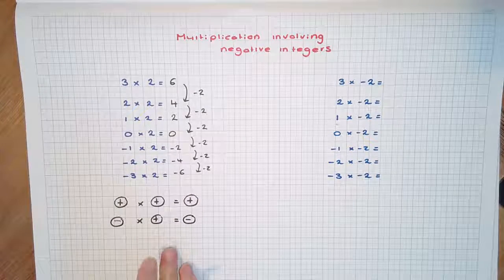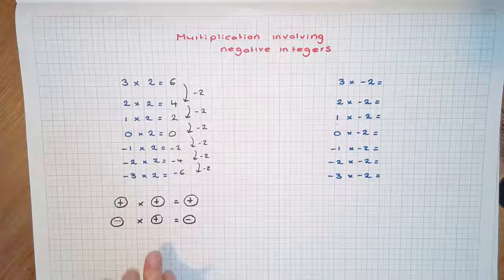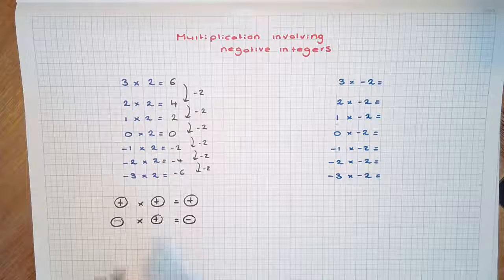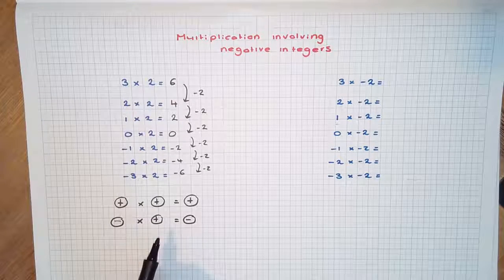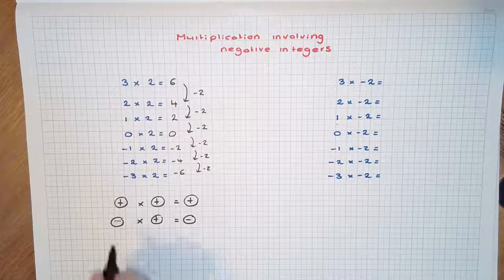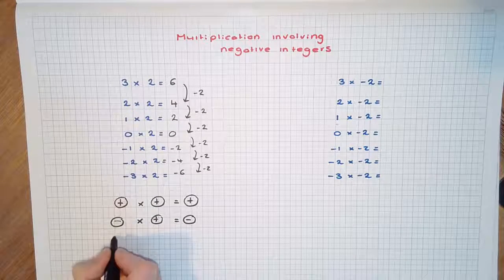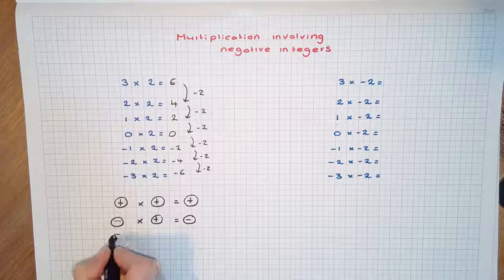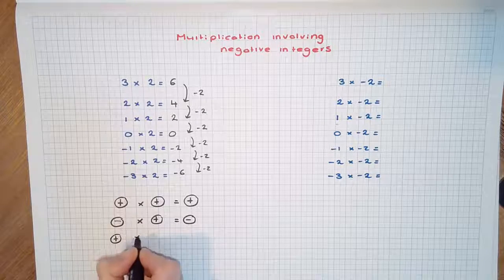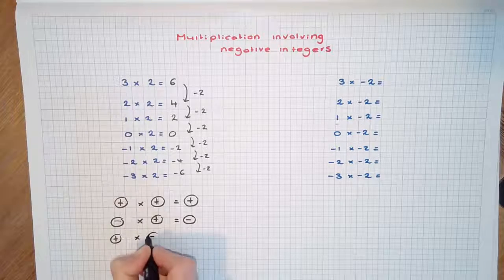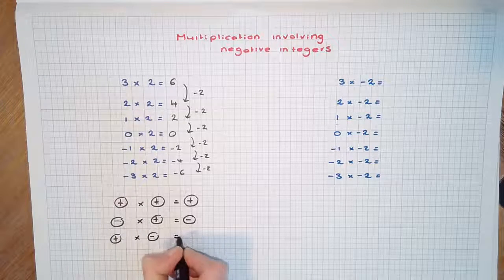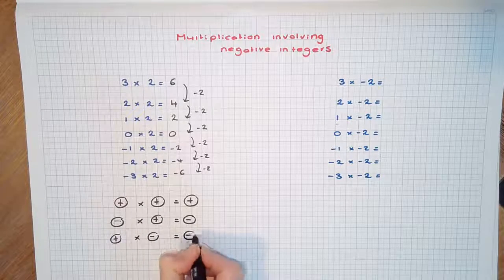Now we know, using the commutative law, that we can reorder factors. So it would also hold that a positive times a negative will also be a negative.